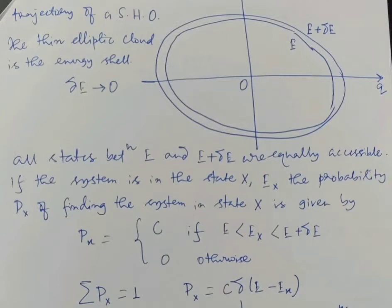It is more appropriate to write this relation as p(x) equals constant c times delta(E minus E_x), where delta is the Dirac delta function. We can approximate the probability as p(x) equals c times delta(E minus E_x).